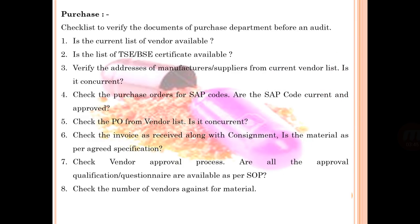About the purchase department: a checklist to verify documents before an audit includes — is the current list of vendors available, is the list of TSA/BSA certified vendors available, and verify the address of the manufacturer and supplier from the current vendor list. These functions are relevant to the purchase of any raw material, exhibits, or drugs.